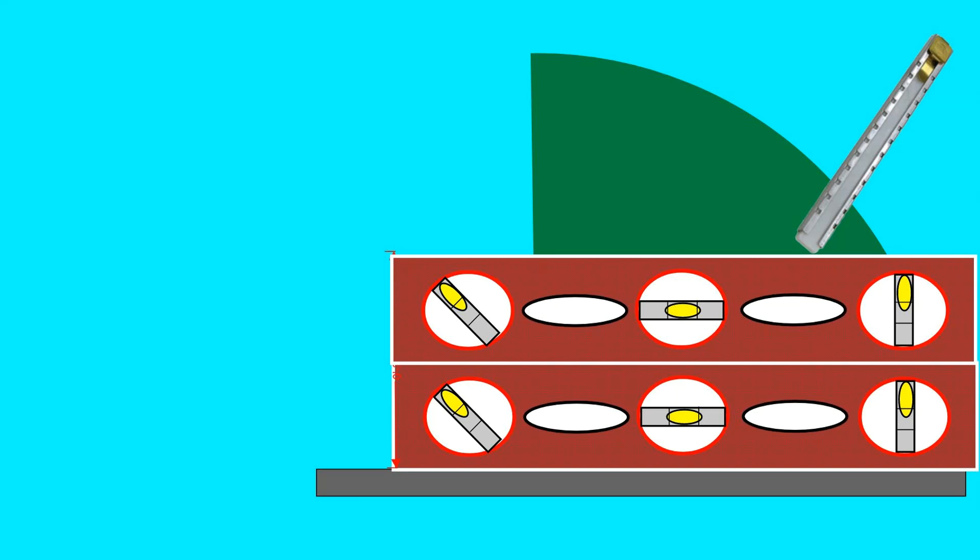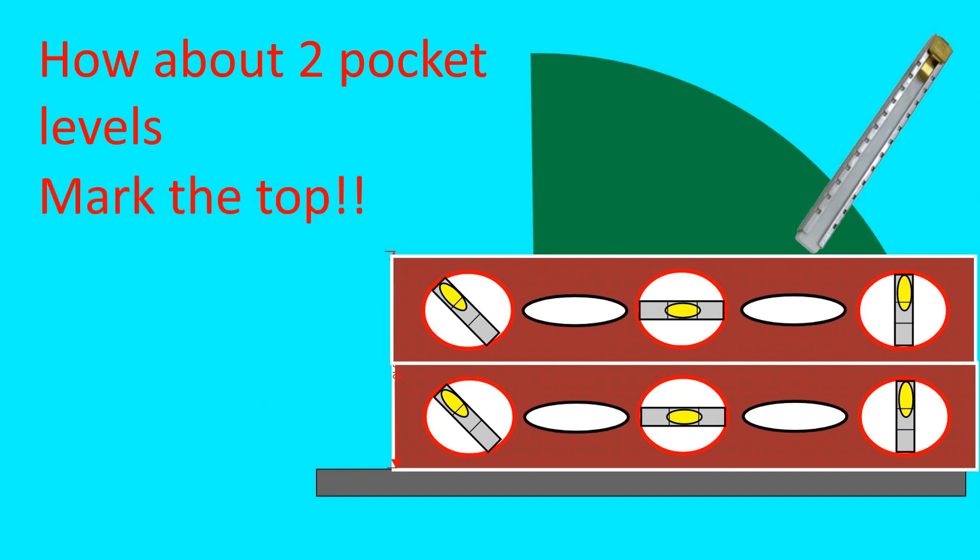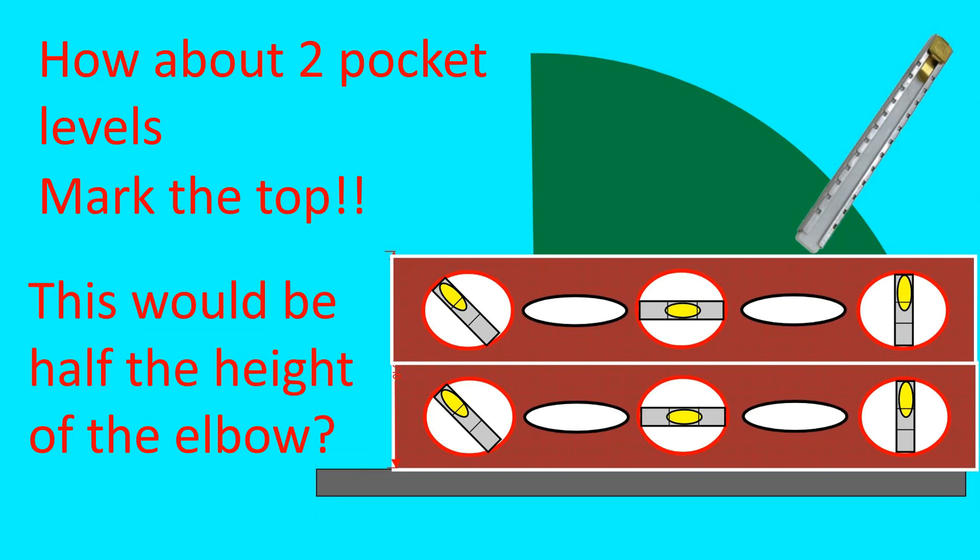So you need to improvise a little bit. In this case we're using two pocket levels. And we lay them on a table, they're parallel to the table, and we mark the top. This would be half the height of the elbow.